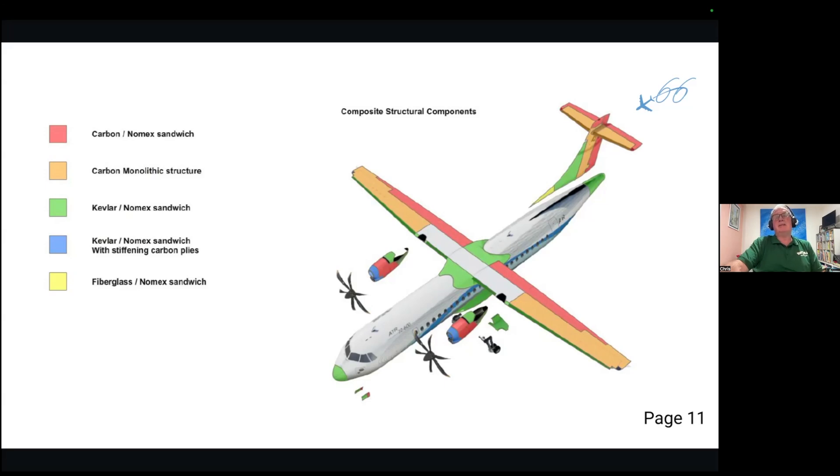And the blue bits are Kevlar-nomex sandwich with stiffening carbon plies. So Kevlar is a very fine fiber, which you know, bulletproof jackets for example, that's what Kevlar is made out of. It's very thin but it has a lot of impact strength. Carbon we know. And lastly, the yellow one is fiberglass-nomex sandwich. So it's fiberglass strengthened with a bit of nomex material. You can see there's not very many bits here.